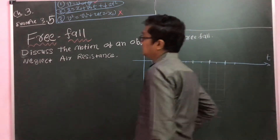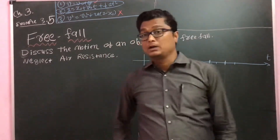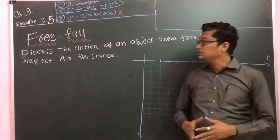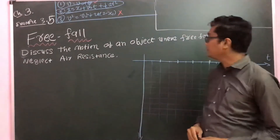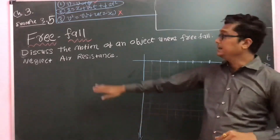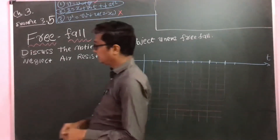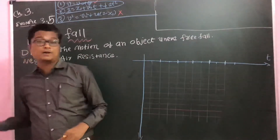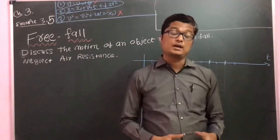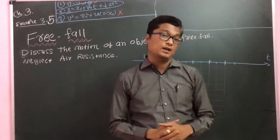Let us discuss a very special case, that is free fall. In your book it is example number 3.5 and the question is: discuss the motion of an object under free fall and neglect the air resistance. We will derive the free fall equations and after deriving them we are also going to discuss the graphs — v-t graph, a-t graph, and displacement versus time graph.